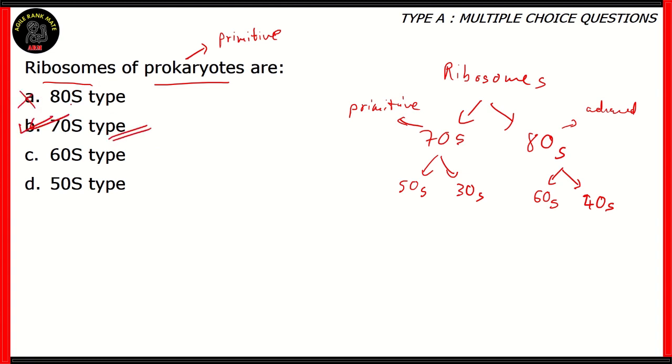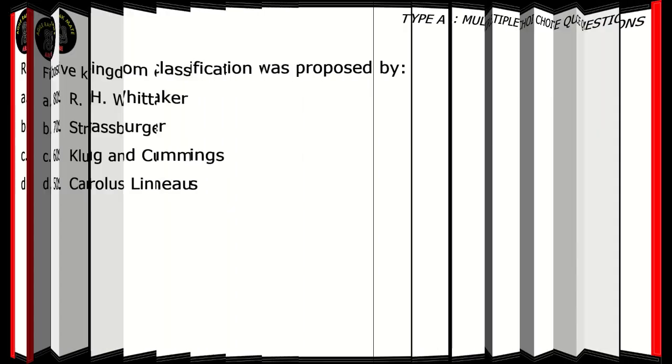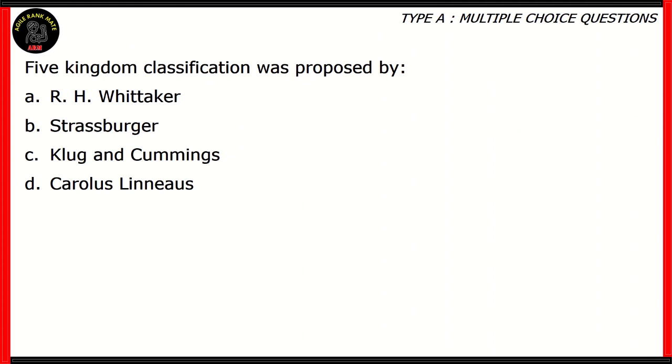So option B turns out to be the right option. A is incorrect because it is found in advanced organisms. Options C and D are incorrect because they're both subtypes. They don't exist as their own. Now let's look at the next question. The five kingdom classification was proposed by R. H. Whittaker, Strasburger, Kluggen-Cummings, Carolus Linnaeus. So which of these is the right option?